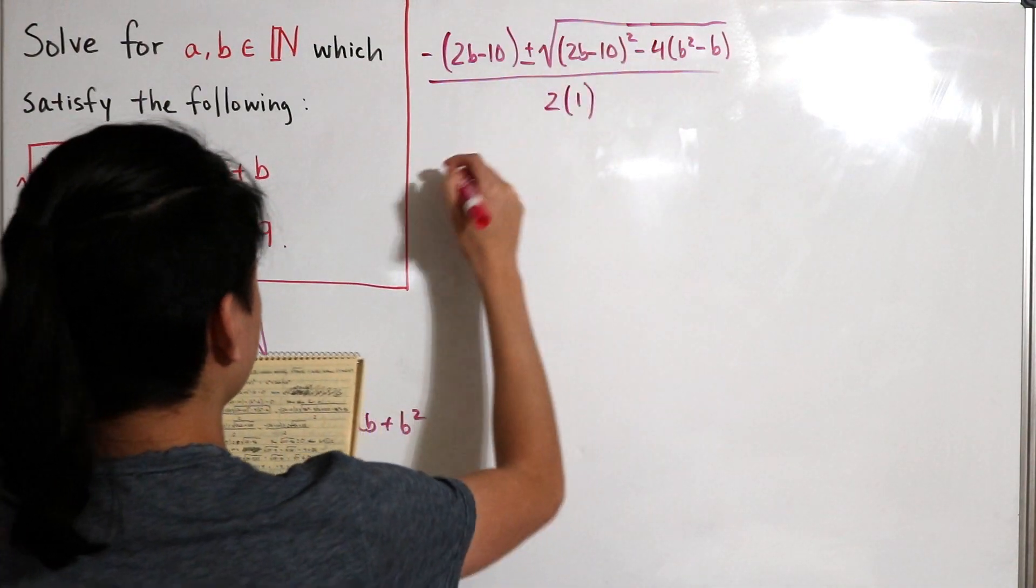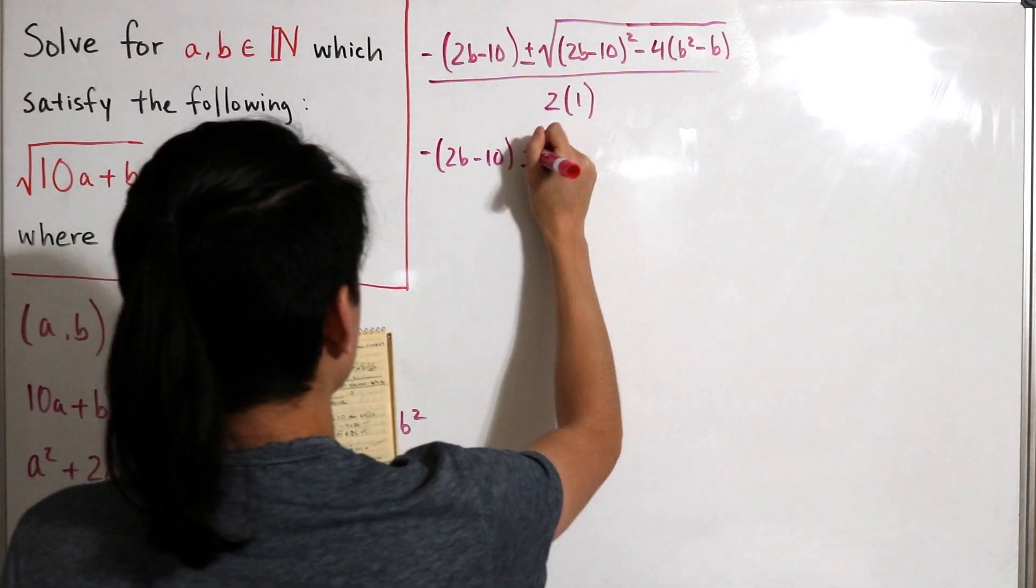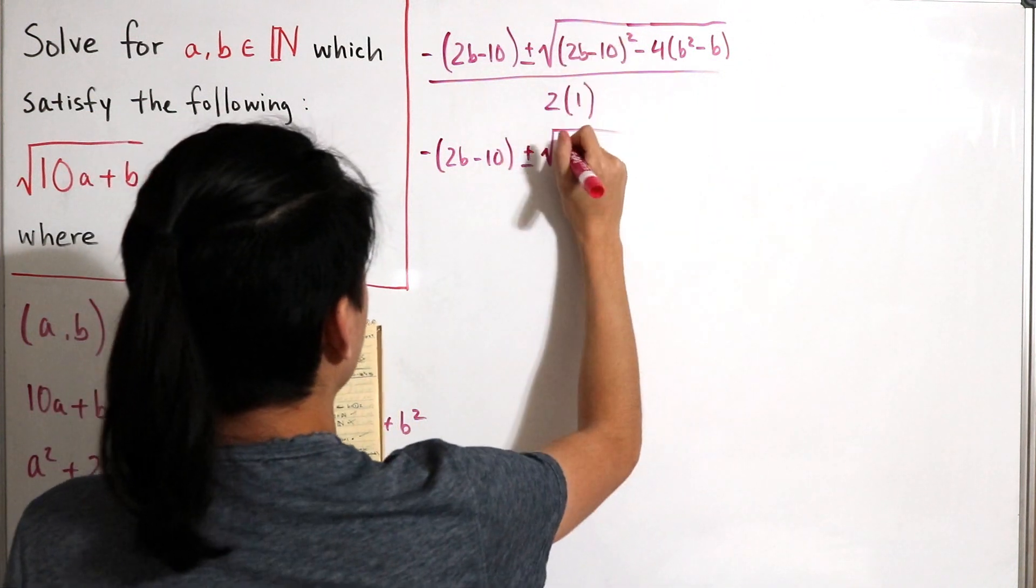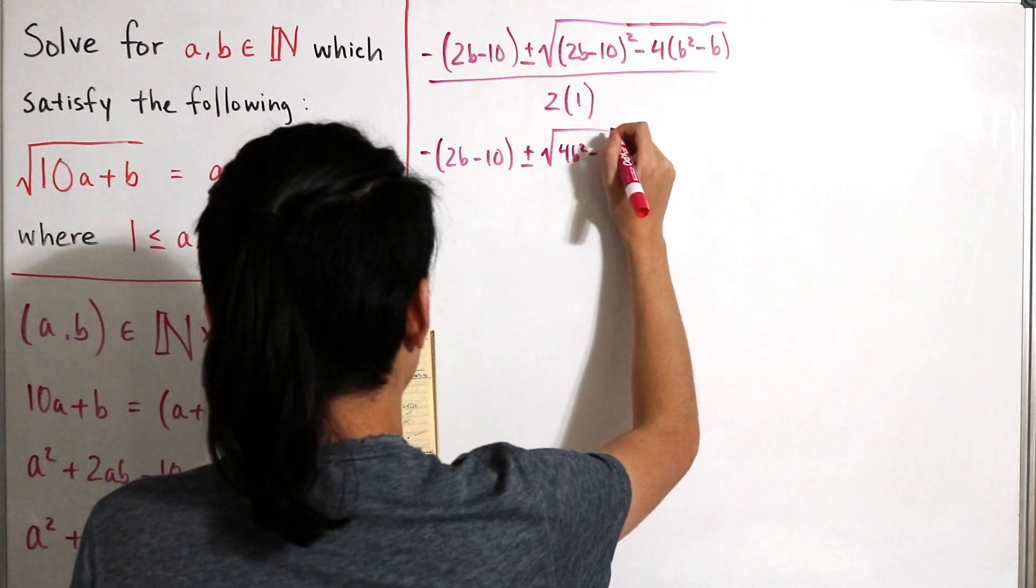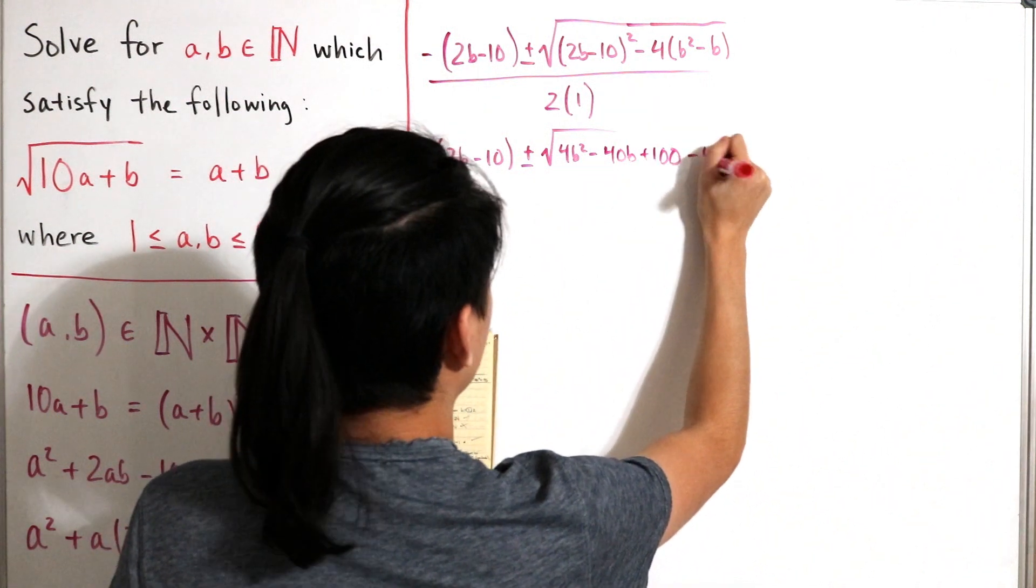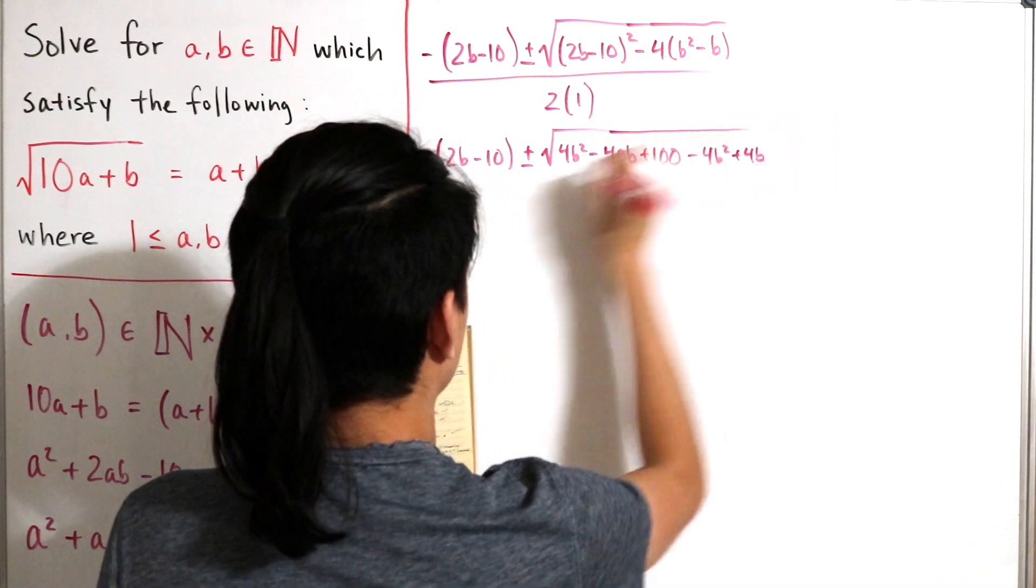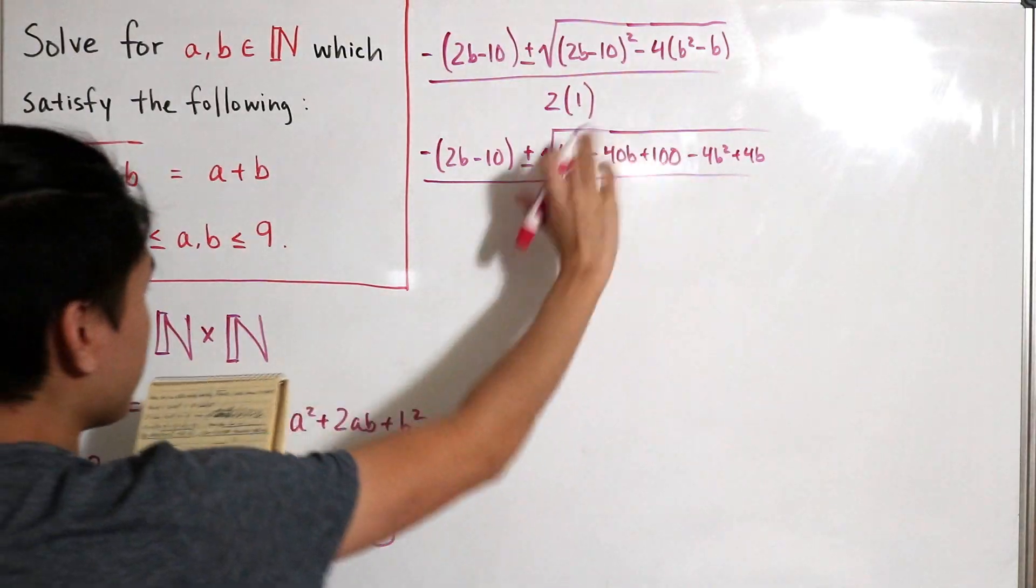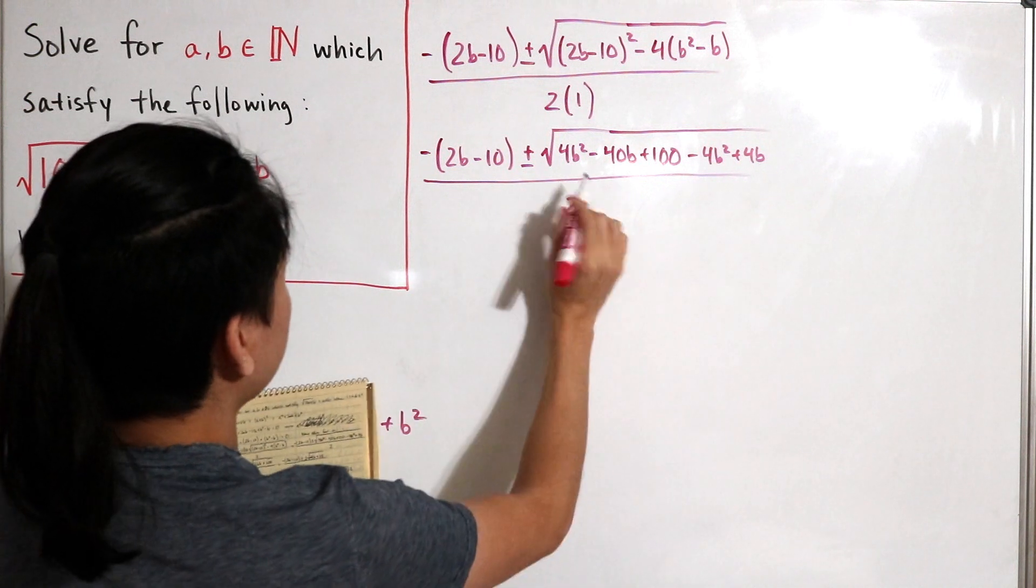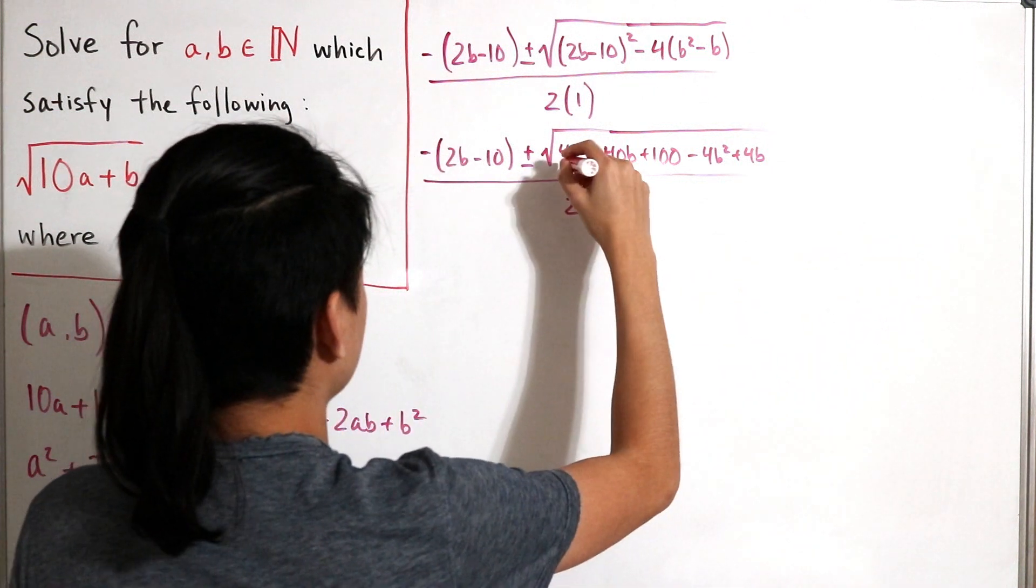Now we can expand the inside of our radical. So we have the square root, I've expanded this out, so this is just 4b squared subtract 40b, then add 100, subtract 4b squared, then add 4b, divided by 2. First thing you'll notice is that 4b squared and minus 4b squared, they cancel each other out, so let's just ignore that.